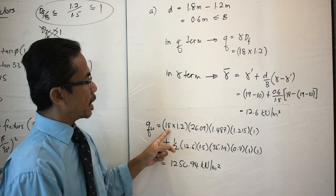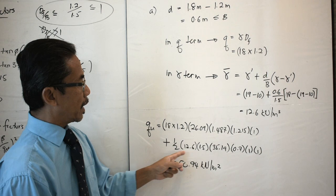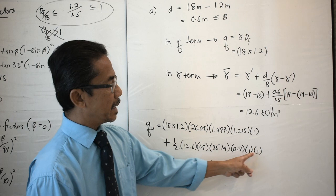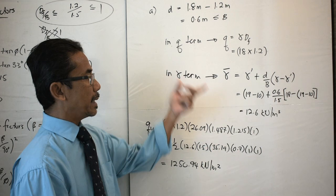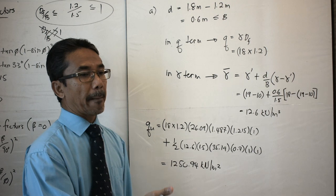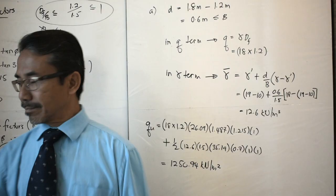That is how we calculate ultimate bearing capacity when the groundwater table is located below the base of the footing, but the distance from the base of the footing to the surface of the groundwater table is less than the width of the footing — case 2.